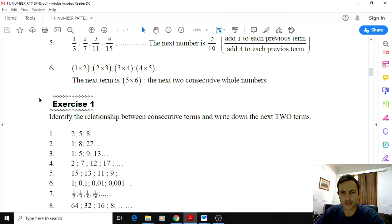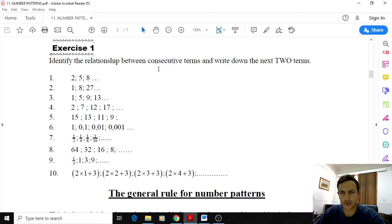I'm not going to go too much into this next one. This is just exercise 1 to identify the relationship between the consecutive terms and write down the next 2 terms. That is the easy part. It's not that hard to identify a pattern and then to determine the consecutive terms. I'm pretty sure you guys are able to do this on your own.